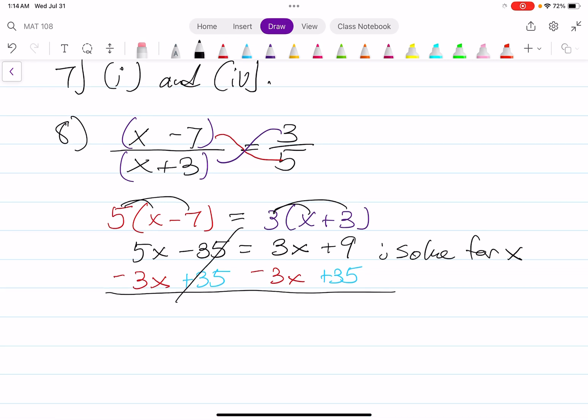The 35s cancel on the left, the 3X cancels on the right. 5X minus 3X is 2X. 9 plus 35 is 44. To solve for X, divide both sides by 2. The two simplifies out. X equals 22. You can always verify to make sure that's correct. I'll show it over here.